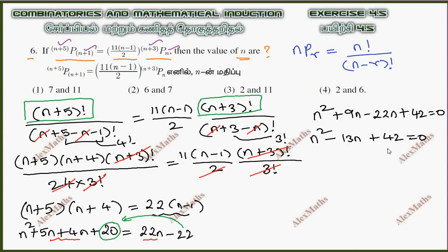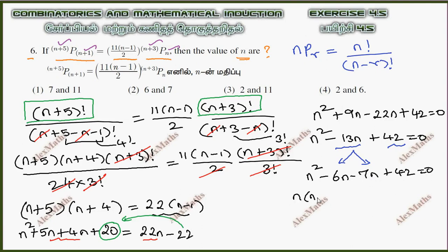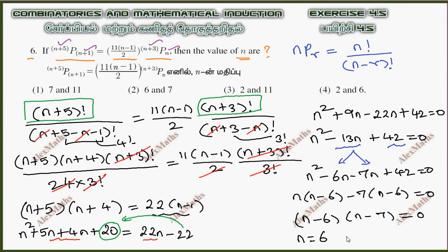Now we factorize by splitting the middle term. We need two numbers with sum -13 and product 42, which are -6 and -7. So n squared minus 6n minus 7n plus 42 equals 0. Taking n common: n(n minus 6), and minus 7 common: minus 7(n minus 6) equals 0. So (n minus 6)(n minus 7) equals 0, giving n equals 6 and n equals 7. The answer is option 2.